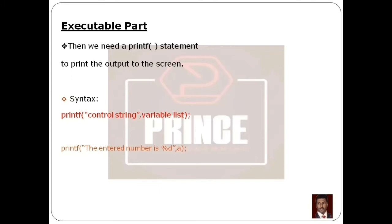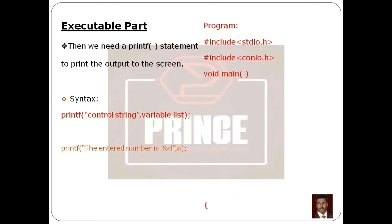I will close the control string with double quotes. Then add the variable name A — the same variable where the input was stored — then close parentheses and semicolon to display the value. In this program, I will add one extra printf statement.